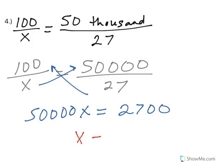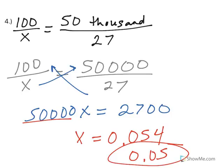I'm going to divide both sides by the 50,000 because that's what's in front of x, and I end up with 0.054. Directions said round to two decimal places, so I would go 0.05 for my final rounded answer.